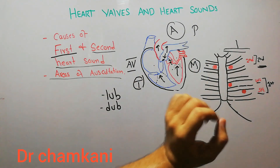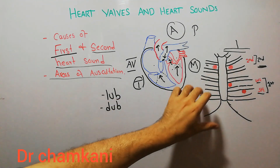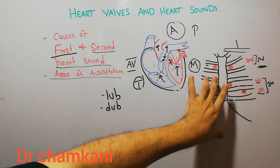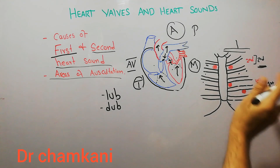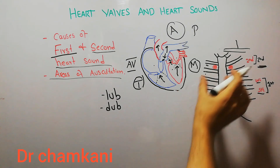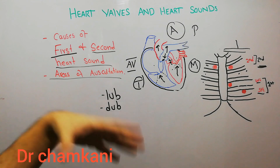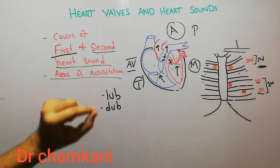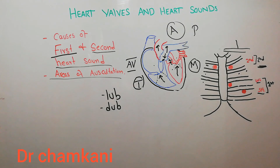That's why the heart sounds are listened to in different areas. We can also listen to heart sounds in other areas, but these specific areas are particularly designated for these sounds. Although sounds can be heard elsewhere, these areas are most specific. So that's how the lub-dup sounds — the first and second heart sounds — are generated, and these are the areas where we should place the stethoscope to properly listen to them.